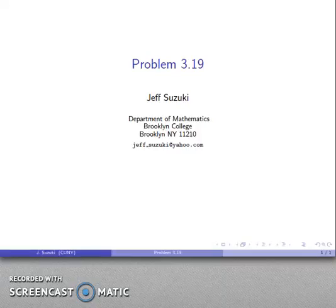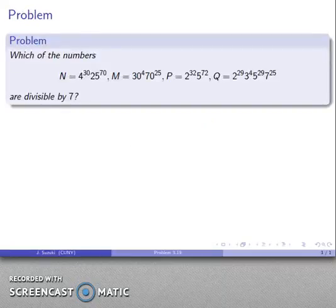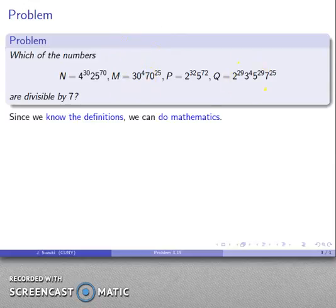Alright, so let's take a look at problem 319. This asks which of the numbers here, here, or here are divisible by seven. Since we know the definitions, we can do mathematics.